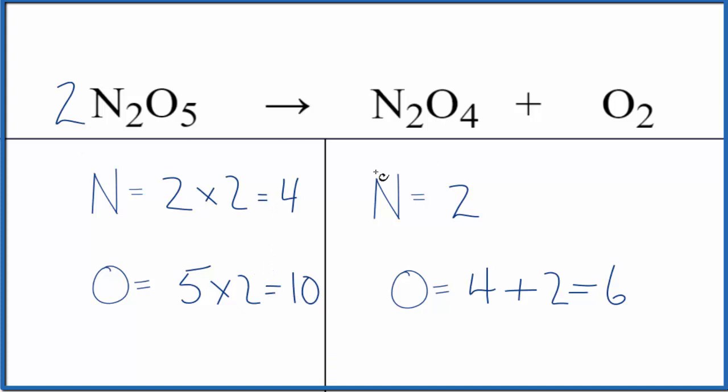Let's fix the nitrogens and see what happens. Put a two in front of the dinitrogen tetroxide, two times two is four, so the nitrogens are balanced. Let's update the oxygens. We have two times four, that gives us eight, plus the two here, that gives us ten. We're done. This equation is balanced.